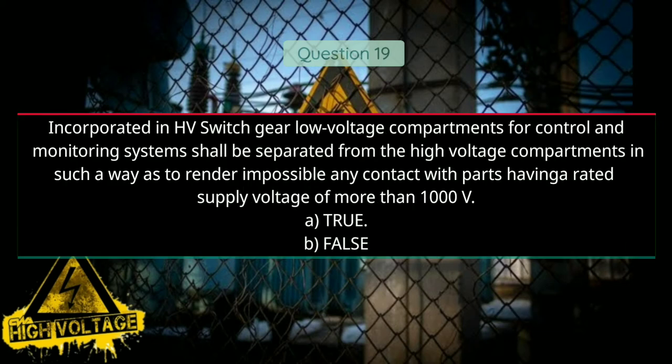Question number nineteen: Incorporated in high voltage switchgear, low voltage compartments for control and monitoring systems shall be separated from high voltage compartments in such a way as to render impossible any contact with parts having rated supply voltage of more than 1000 volts. Option A: true, Option B: false. Answer will be A, true.